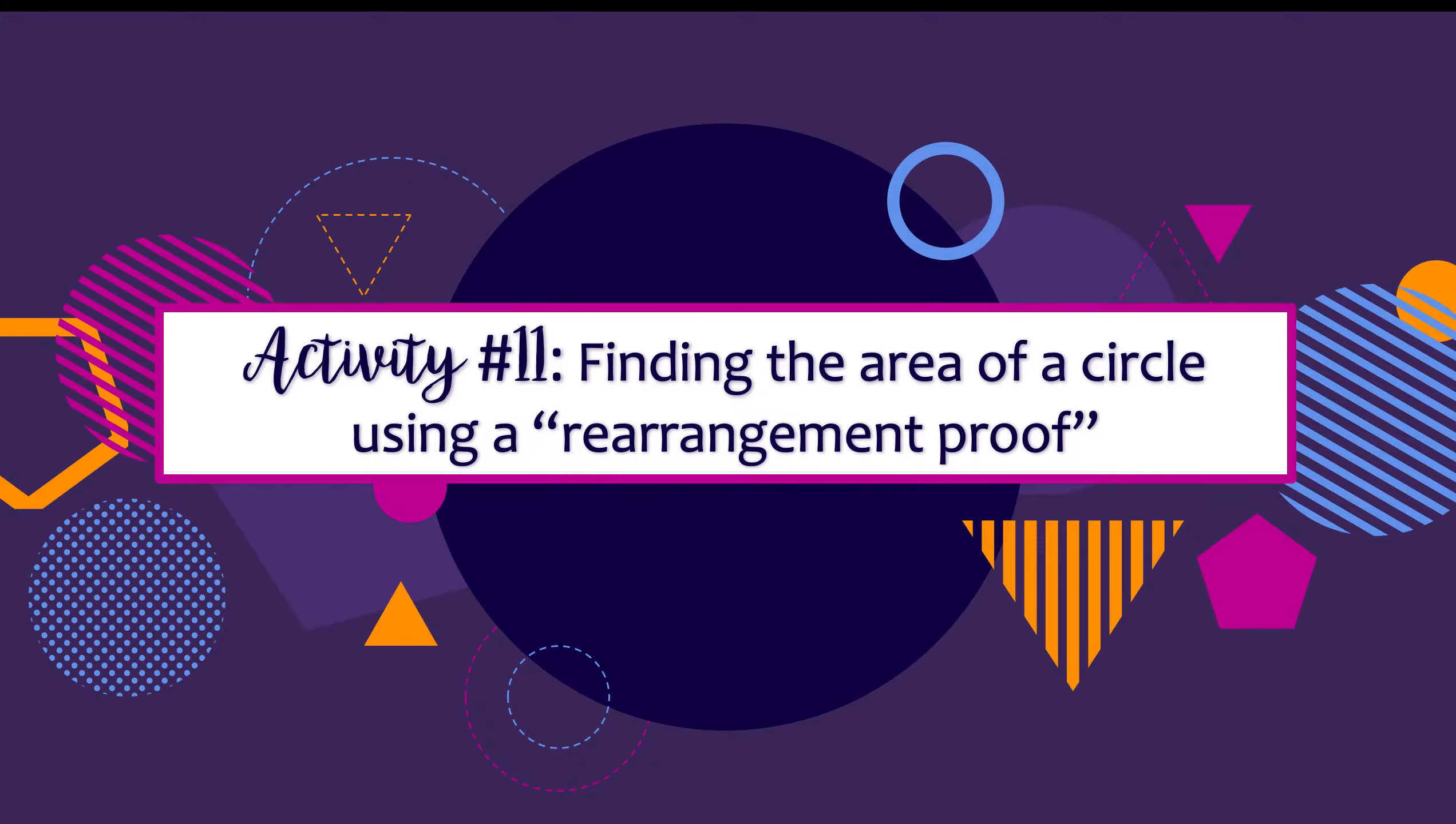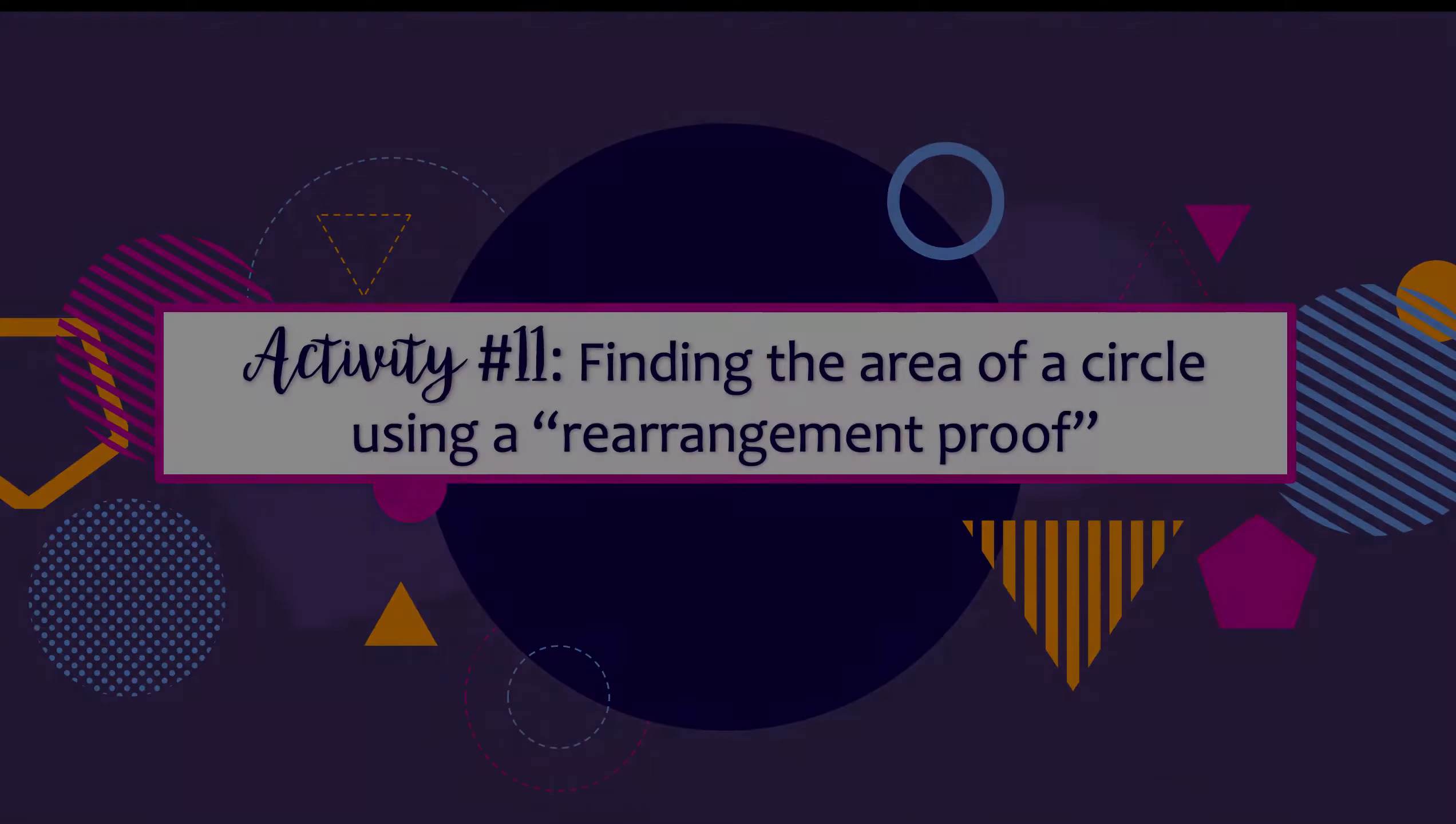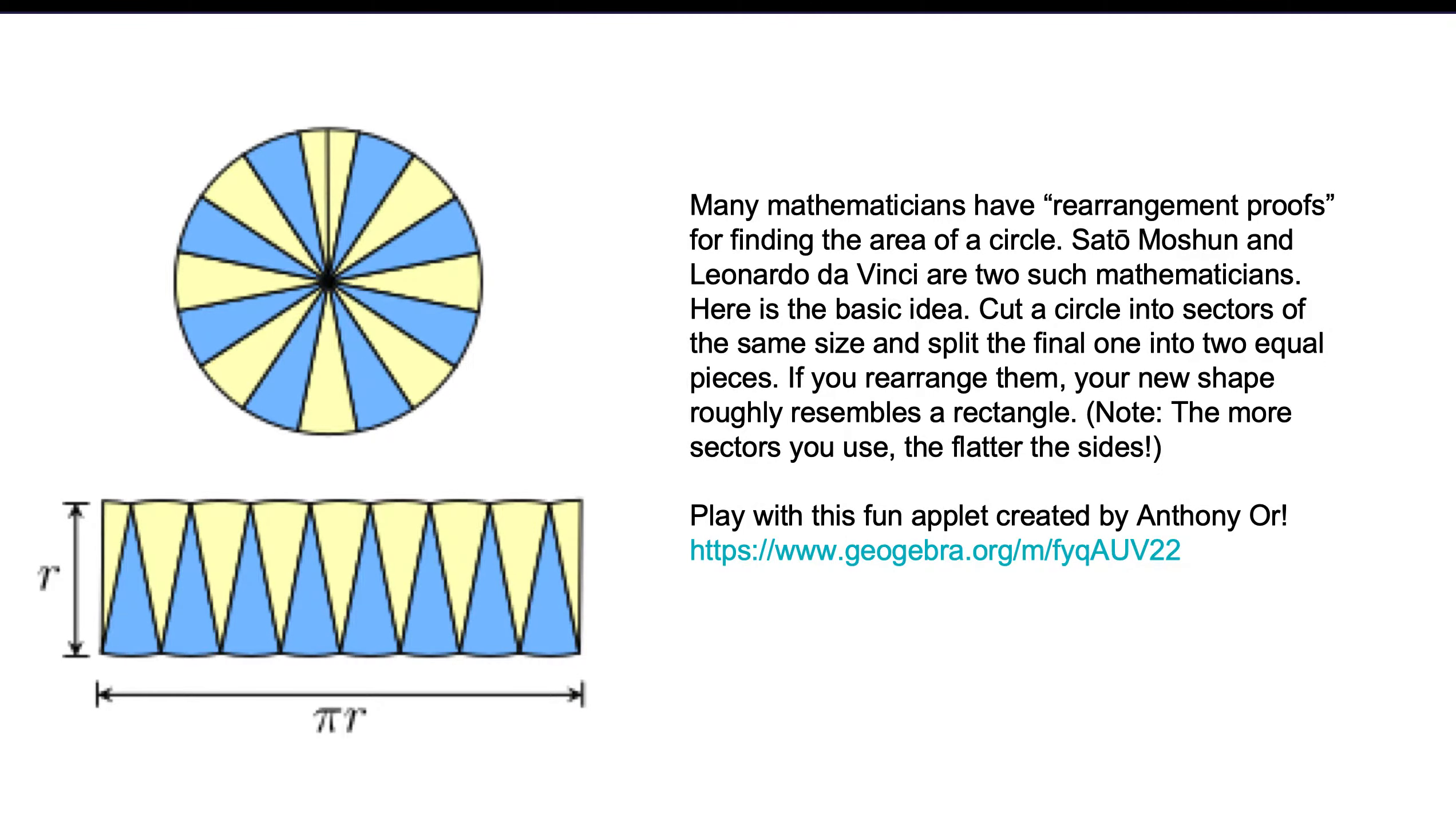Today we're going to find the area of a circle using a rearrangement proof. Several mathematicians have used rearrangement proofs over the years. Two such mathematicians are Sato Moshun and Leonardo da Vinci. Here's the basic idea.